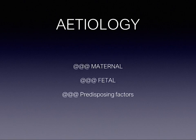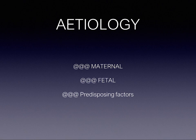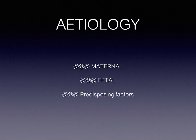Etiology of cord presentation or cord prolapse: This occurs when the presenting part of the fetus does not properly fit into the lower uterine segment. Fetal causes include malpresentation such as complete or footling breech, transverse and oblique lie, prematurity, anencephaly, polyhydramnios, twins, or multiple pregnancies. Maternal causes include contracted pelvis or pelvic tumors.